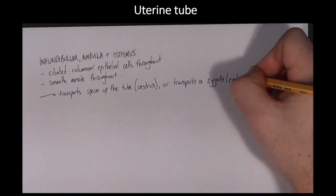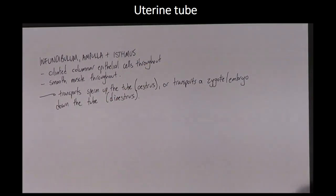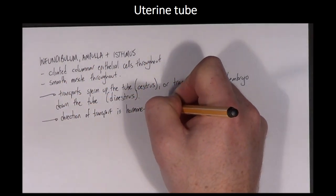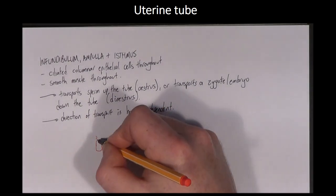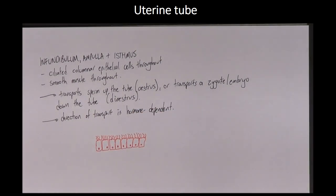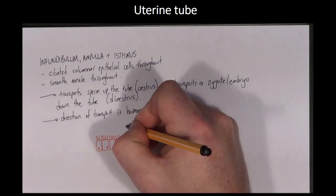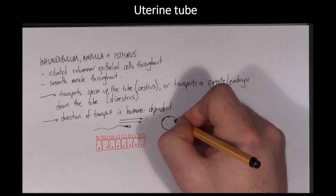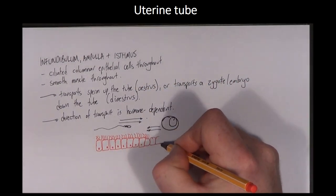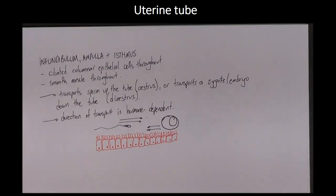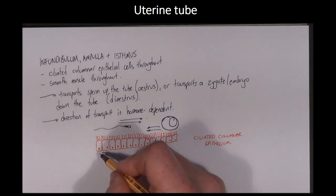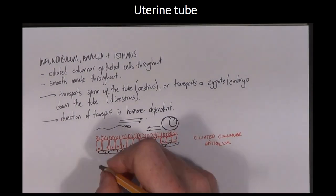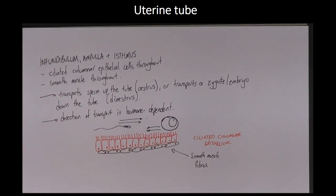During oestrus, the fimbriae become engorged due to increased blood flow and smooth muscle contractions cause them to move over the surface of the ovary to pick up the ovulated oocyte. In the cow, smooth muscle contractions of the uterine tube and ciliary movements during oestrus cause sperm to reach the ampulla within five minutes of mating. During di-oestrus, the direction of smooth muscle contractions and ciliary sweepings is reversed, and the zygote is moved towards the uterus. It takes four to five days for the zygote to move through the isthmus and reach the uterus.